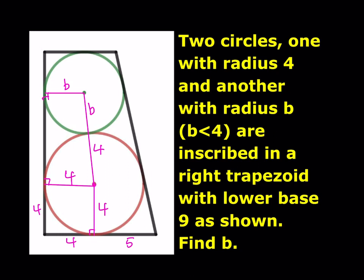Let's make another connection from the center to the slanted side of the trapezoid. This point is outside the circle and we're drawing two tangents, so this piece is also going to be 5. We can do something similar for the small circle: connect here, this is b, and then make another perpendicular — this is also b. So this is b and this is b as well.